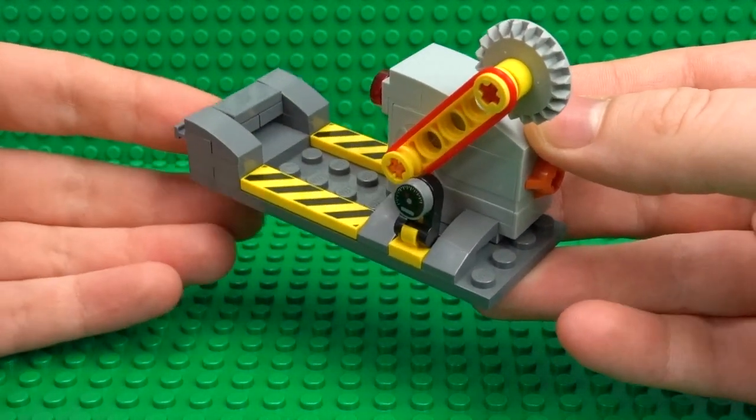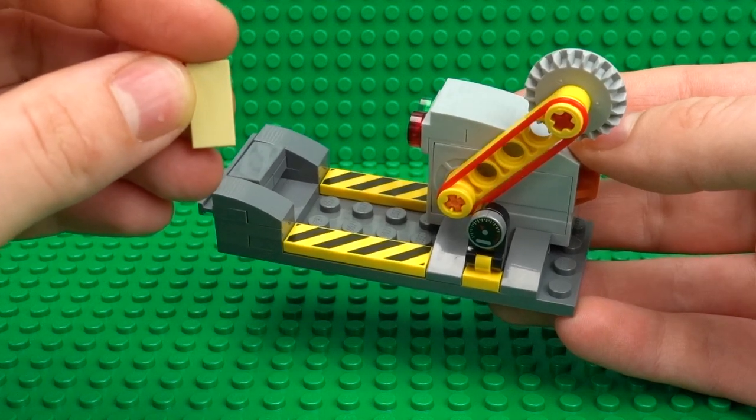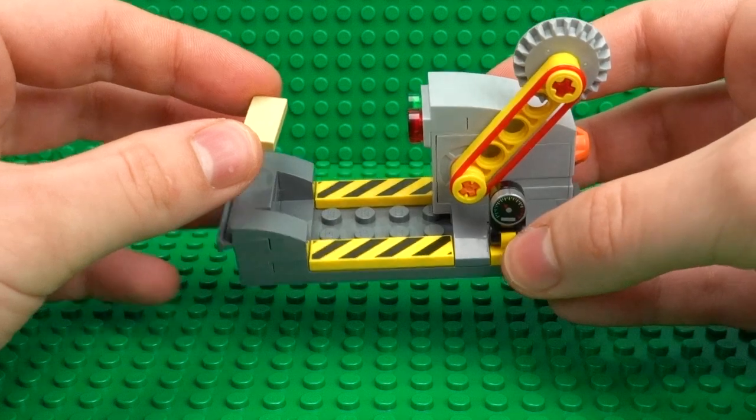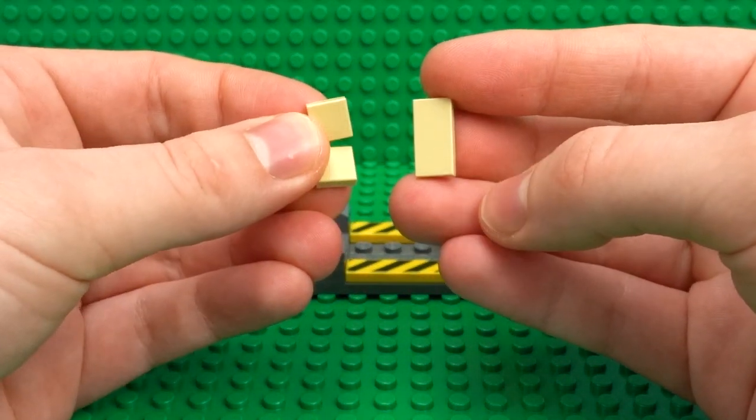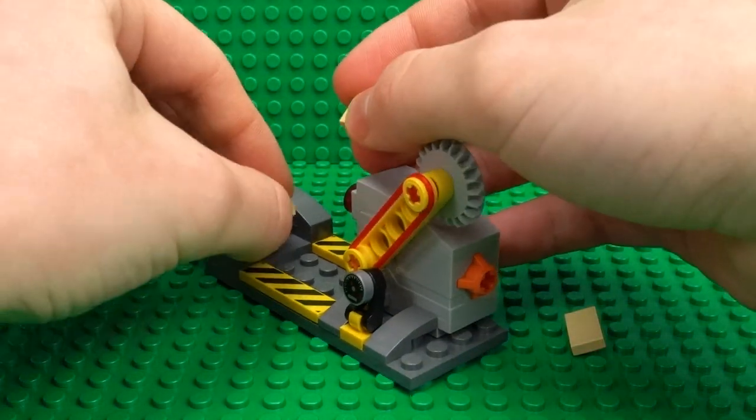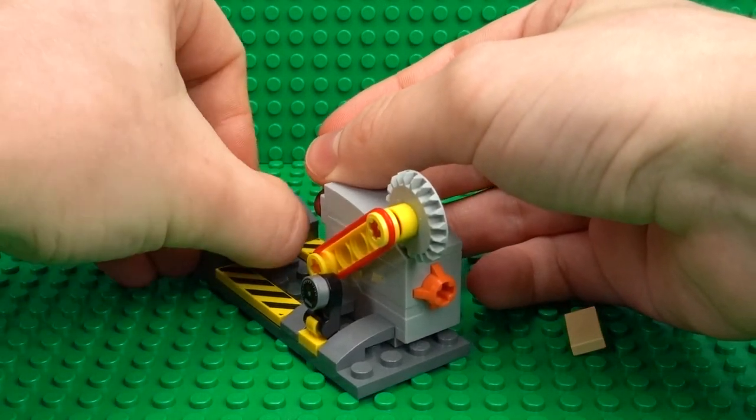So now let's explain how this actually functions. So you saw earlier how when you press the button the saw goes down, so that's pretty basic. But then to create this cutting the tile in half effect, we don't actually cut this 1x2 tile in half. All we have is a 1x2 tile and two 1x1s.